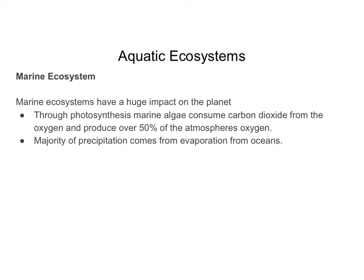Marine ecosystems are the oceans — the saltwater environments — and they have a huge impact on the planet. Through photosynthesis, marine algae consume carbon dioxide from the environment and produce over 50% of the oxygen found in the atmosphere. Additionally, the majority of precipitation comes from evaporation from the oceans, meaning most of the precipitation we see originates from ocean water.